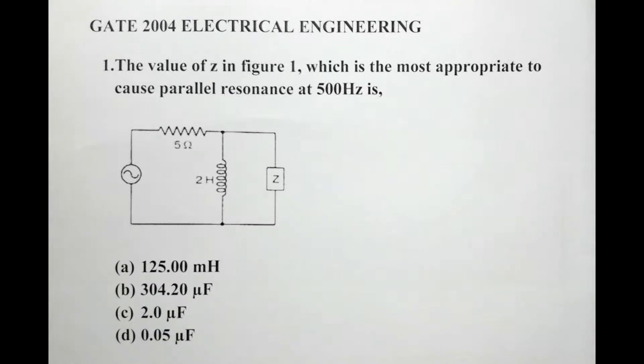The value of Z in figure 1 which is the most appropriate to cause parallel resonance at 500 Hz is? So we have our options: A says 125 mH, B 304.20 µF, C 2 µF and D 0.05 µF.